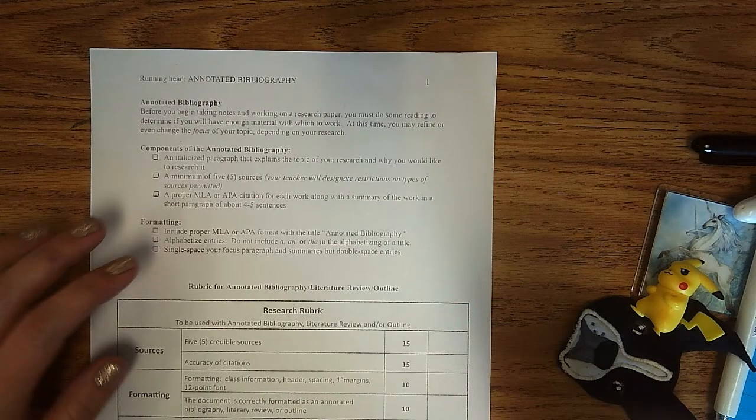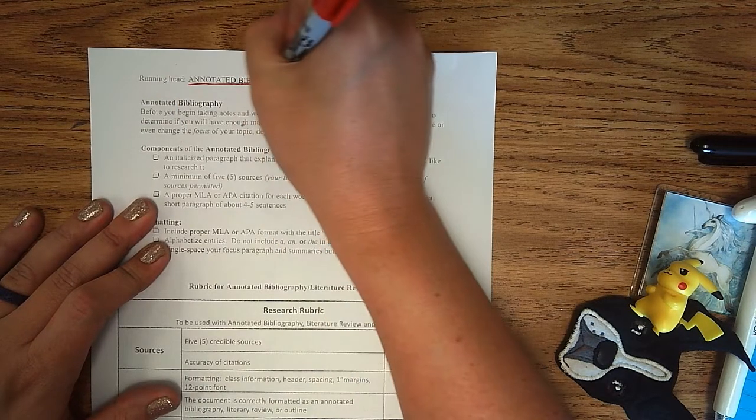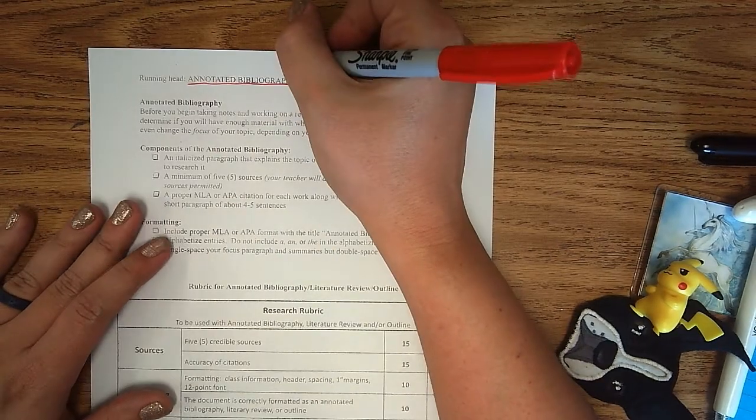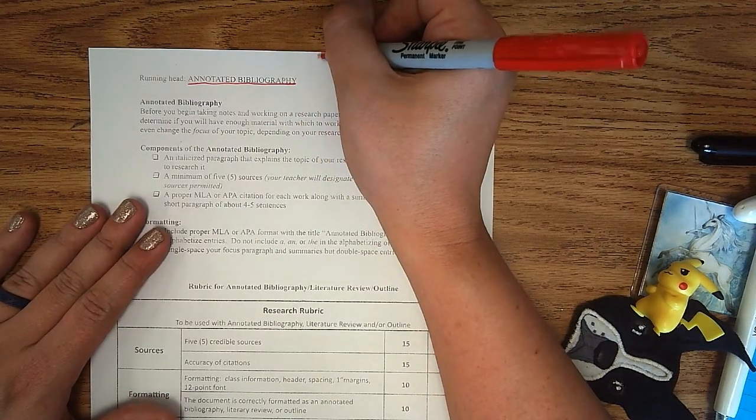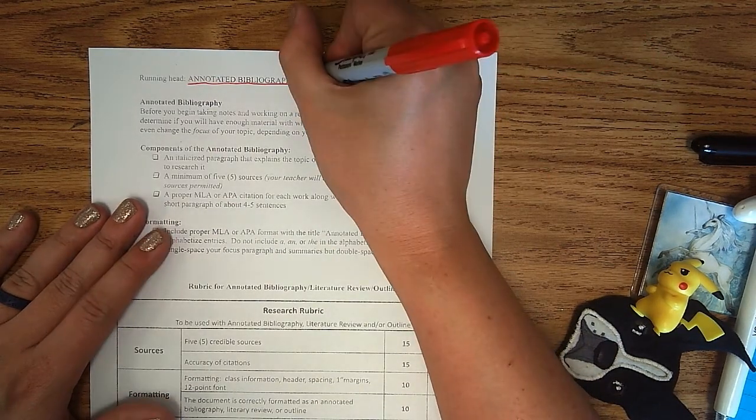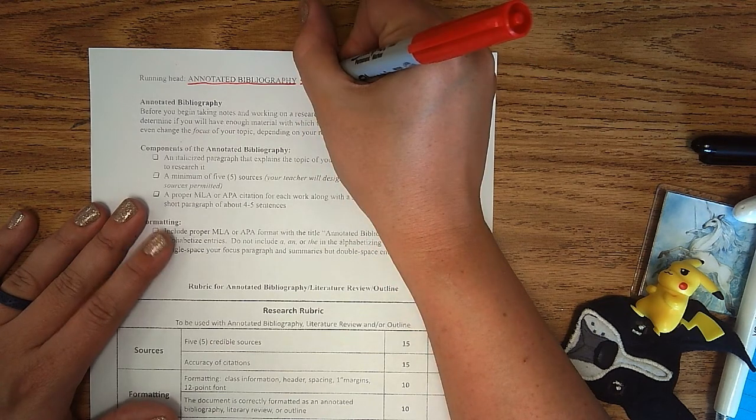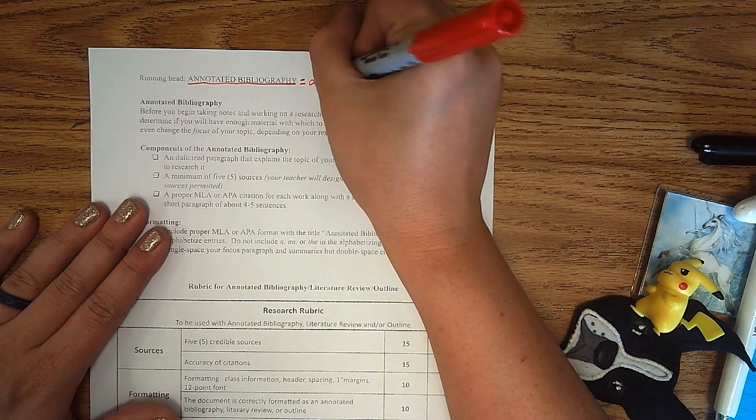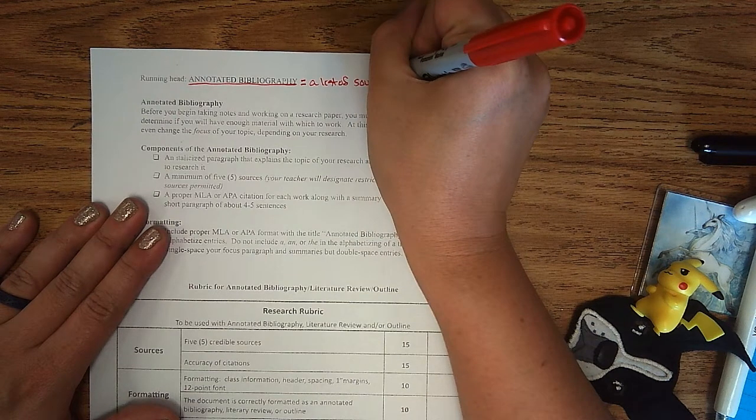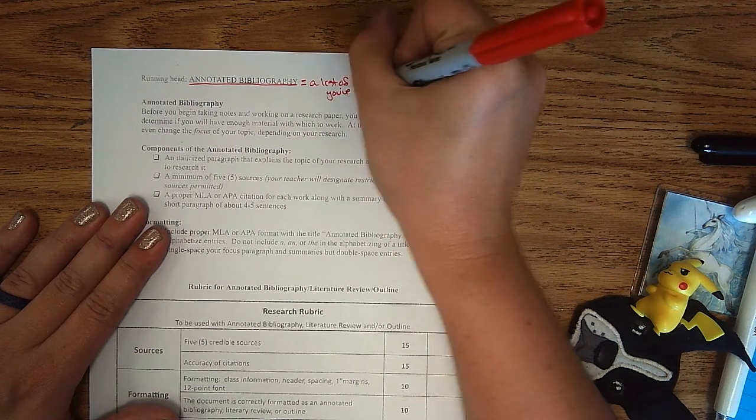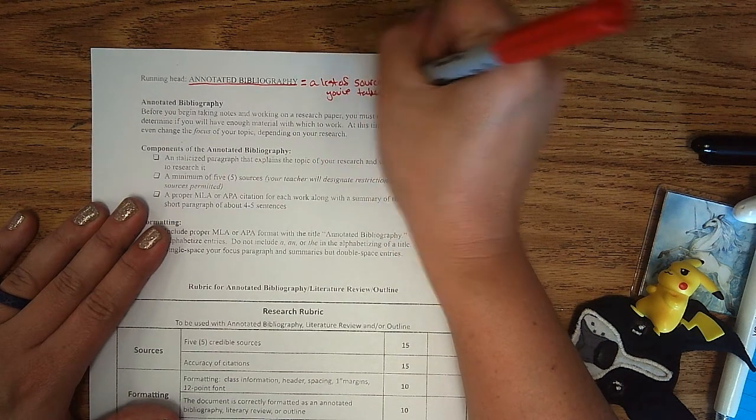So an annotated bibliography - this is a big, long word, and I know it can be overwhelming, but really annotated means to take notes on, and bibliography just means a list of sources. So this literally means a list of sources you've taken notes on, a list of sources you've studied.